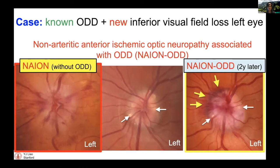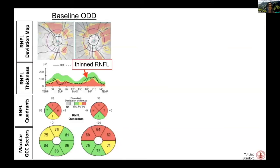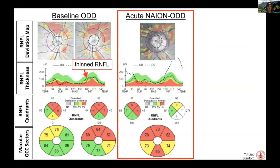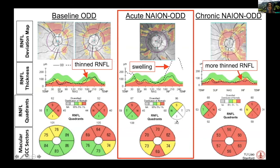This is another case of NAION without optic disc drusen — you can see diffuse swelling but less of a raised architecture. This patient's retinal nerve fiber layer was thin prior to developing new vision loss. During the active phase of disease, the left retinal nerve fiber layer is swollen with pseudo-normalization of measurements in different quadrants. After this event, her retinal nerve fiber layer became even thinner compared with baseline.